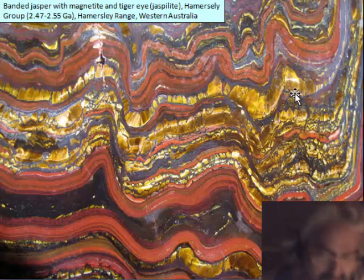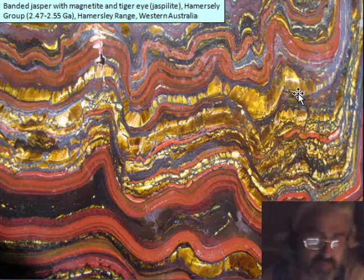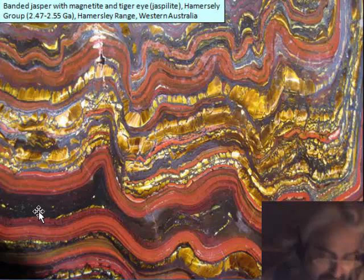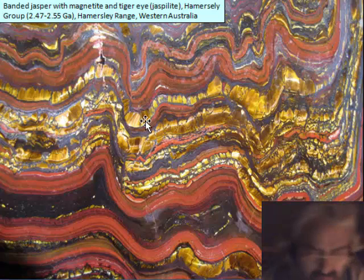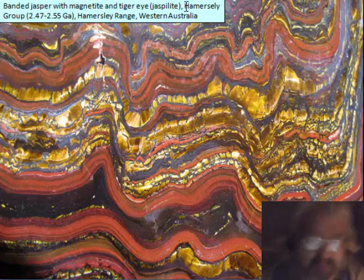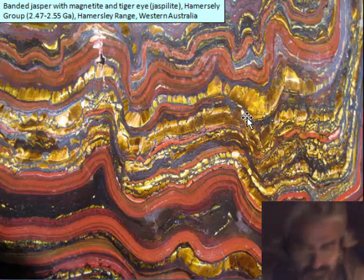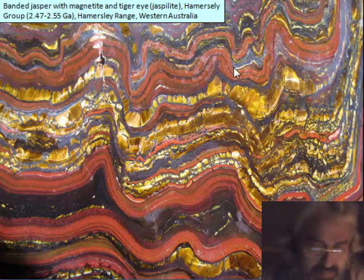This is what a banded iron formation looks like. In this case, we can see the black bands are magnetite, the red bands are red jasper, and the yellow is another form of silica called tiger eye. This rock is called jasper eye — it is a mix of jasper and magnetite, and this is the most famous variety for lapidary work. This specimen is from the Hamersley Range in Western Australia.